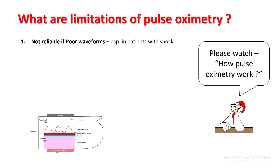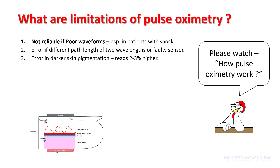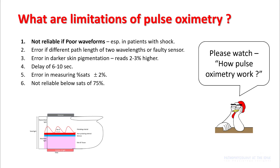A major limitation of pulse oximetry is that readings are not reliable if you have a poor waveform, for example in a patient with shock or hypotension. There can be error if you have a faulty sensor or different path lengths of the two wavelengths. You can get error rates with darker skin pigmentation. There is a delay of 6 to 10 seconds before measurement, an error rate of around 2%, and readings are not reliable below SaO2 of 75% or hemoglobin less than 5 grams.